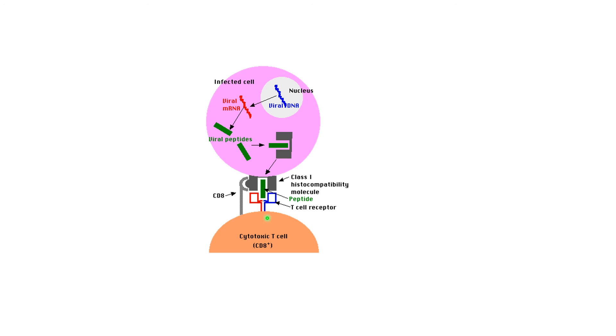If this cytotoxic T-cell thought, 'Wait, this is the infected cell I'm supposed to kill,' it would know for sure because the epitope and MHC class 1 would fit perfectly into its T-cell receptor and CD8 coreceptor.